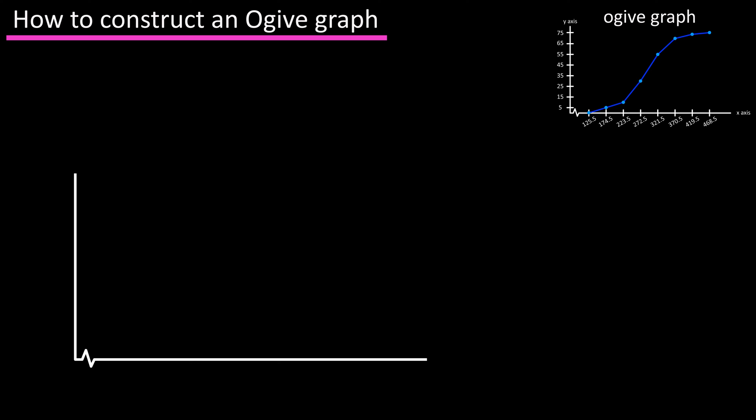So the first thing we're going to do is draw an x and y axis. For the x-axis I'm going to put this little squiggle in near the beginning of the line, and I'll explain that later in the video. Next we need to label the zeros, which is going to be where the x and y axes meet. Next we need to label both of these axes.